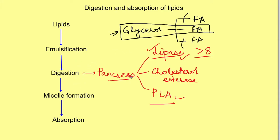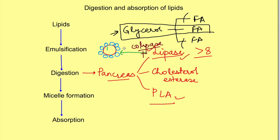Bile salts attached to the fat globule surface are helpful in emulsification but also prevent lipase from attaching to the fat globule. This is where colipase plays a role. Colipase binds with lipase and helps it attach to the fat globule, so without colipase, lipase cannot act. From the pancreas, lipase and colipase are released in a ratio of 1:1 to ensure digestion is possible.